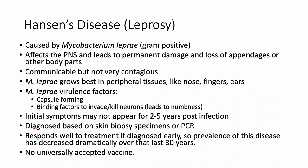Diagnosis of Hansen's disease requires a skin biopsy or PCR, and it responds very well to early treatment. The dramatic increase in screening over the last 30 years has led to a significant decline in the disease. There is no definitive specific vaccine, but the tuberculosis vaccine has been observed to provide some cross-protection, as populations susceptible to tuberculosis are also more likely to experience Hansen's disease.